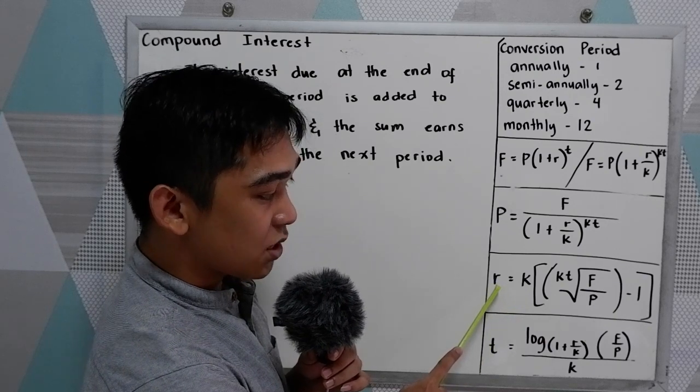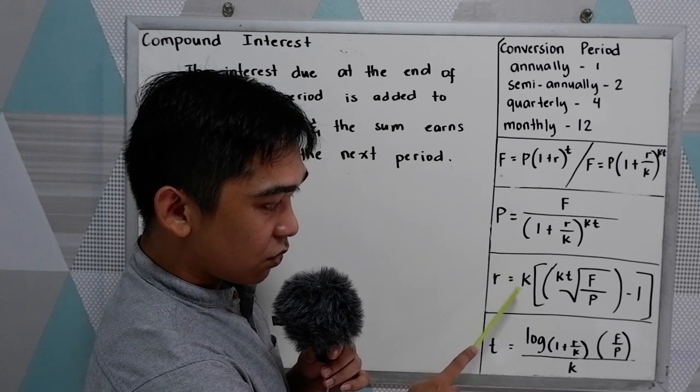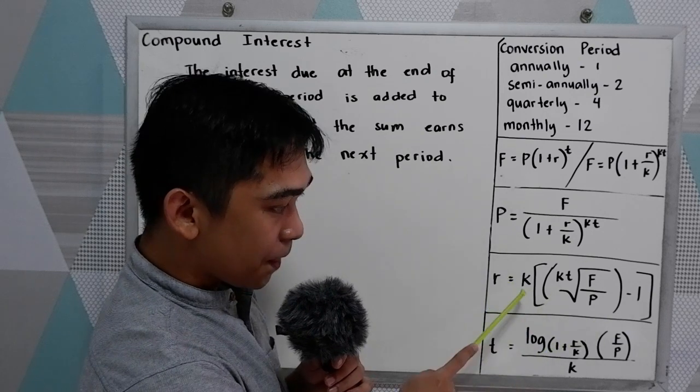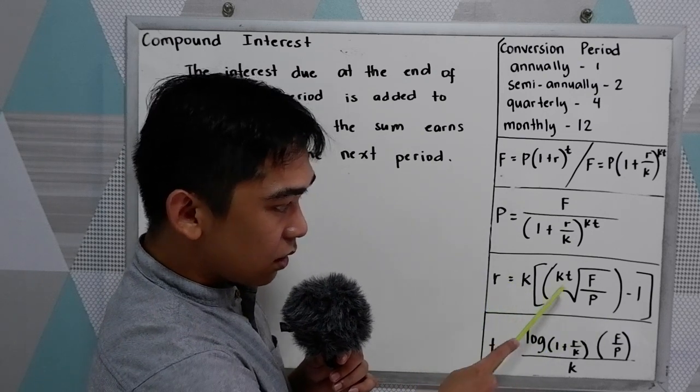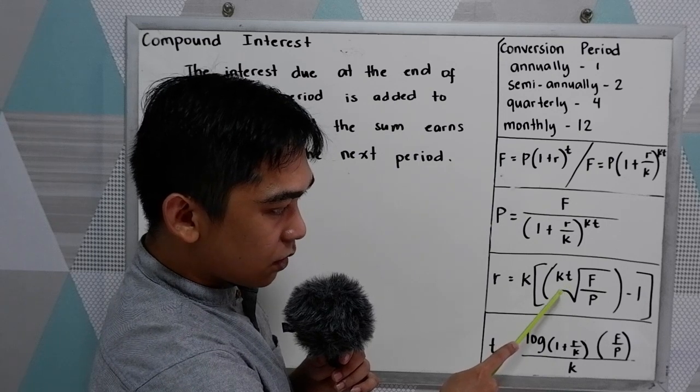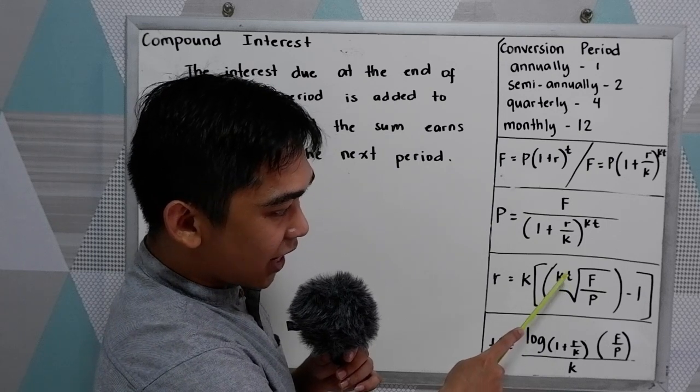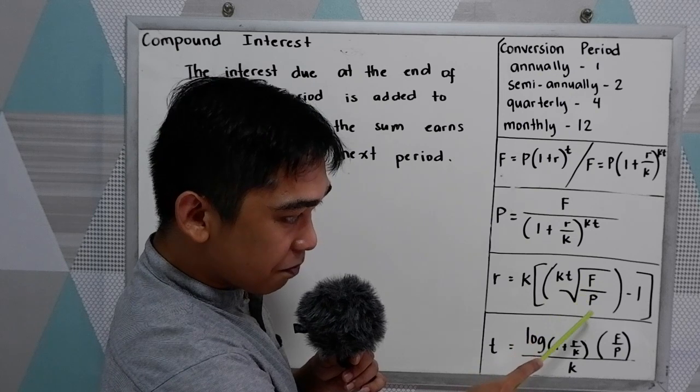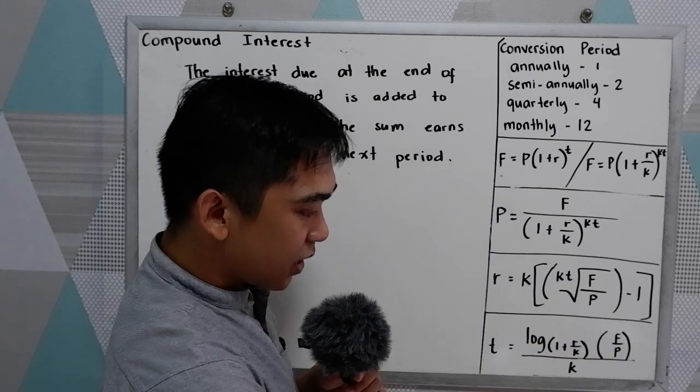And if the unknown is R, we're going to use this formula: K quantity, KT root of F over P minus 1.